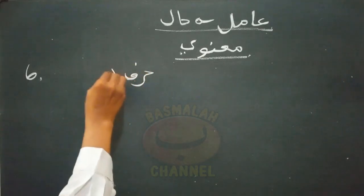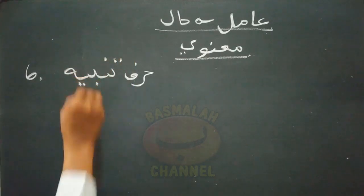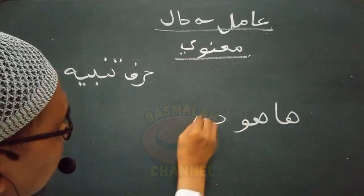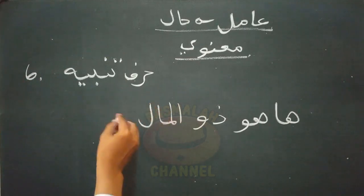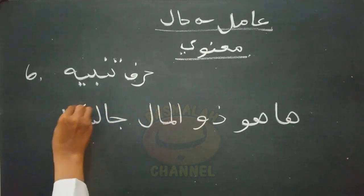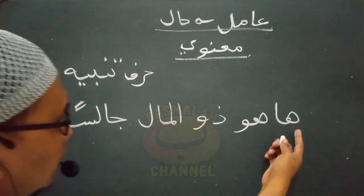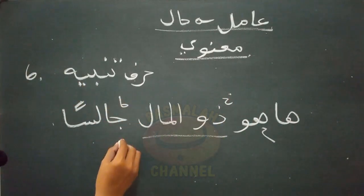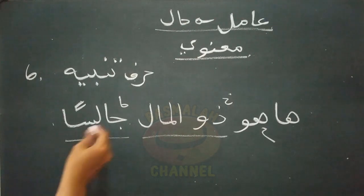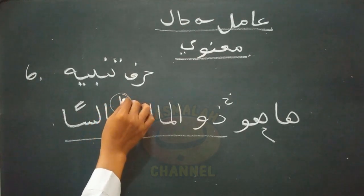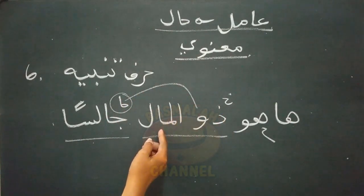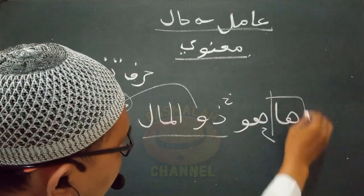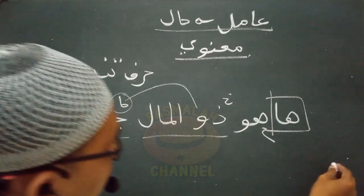Kemudian yang keenam adalah berupa huruf tanbi. Lafat jalisan ini kedudukannya sebagai hal yang menjelaskan keadaan sahibul halnya yaitu lafat zulmali, dalam keadaan nasob. Yang mewajibkan nasob adalah amilnya yang berupa huruf tanbi. Takdirannya adalah unabbih - aku memperingatkan.